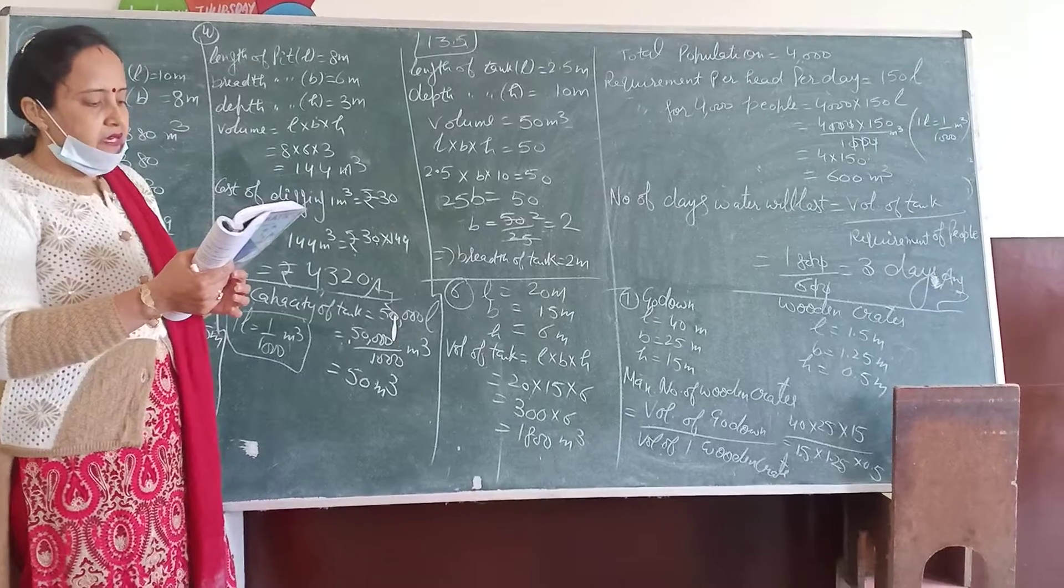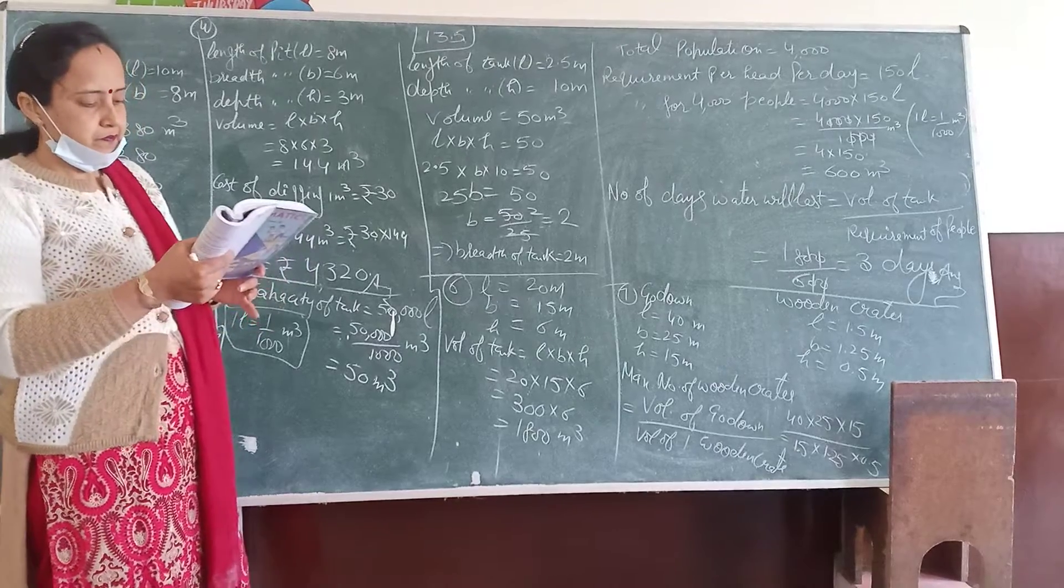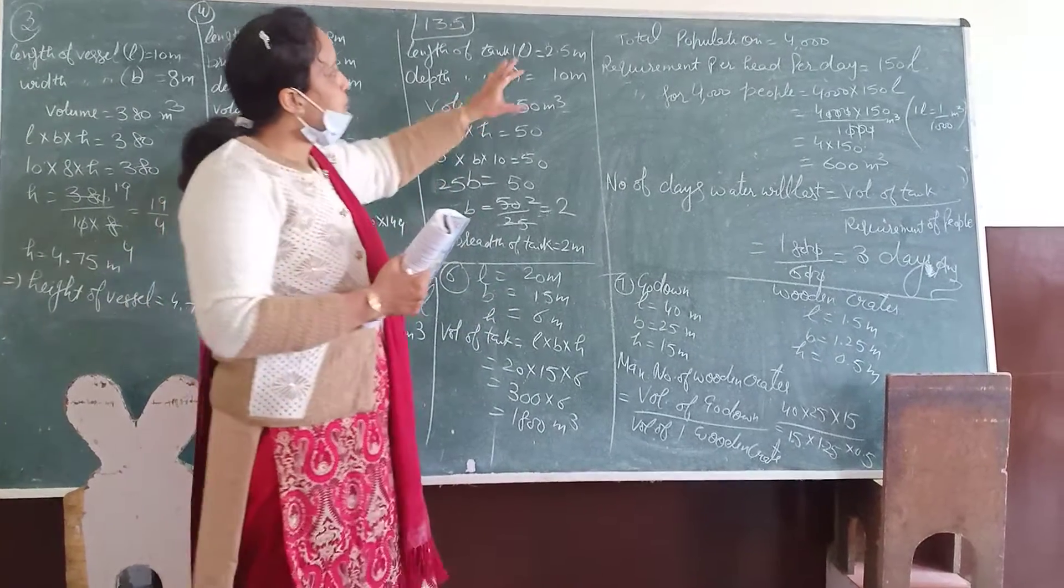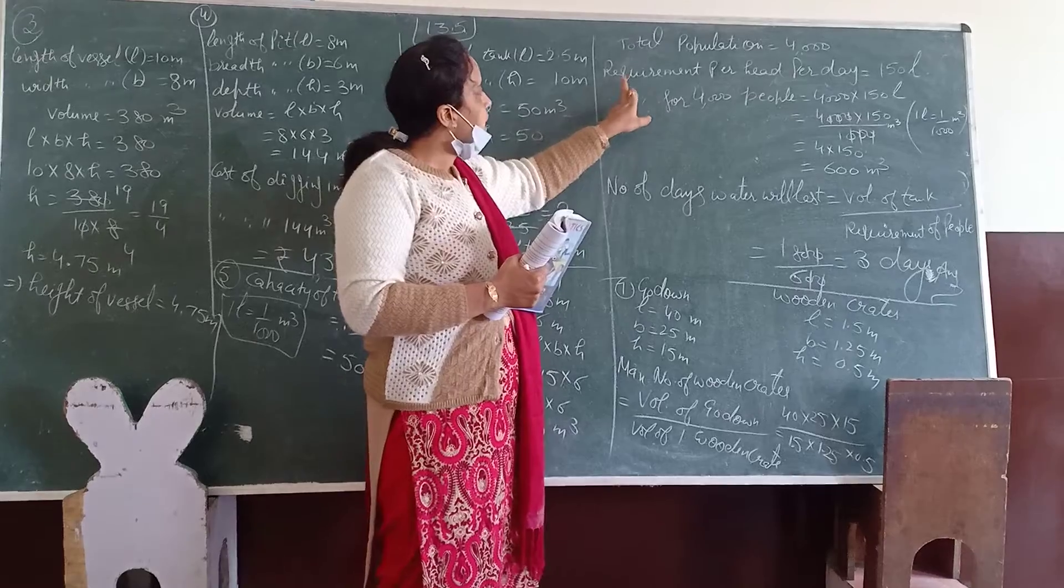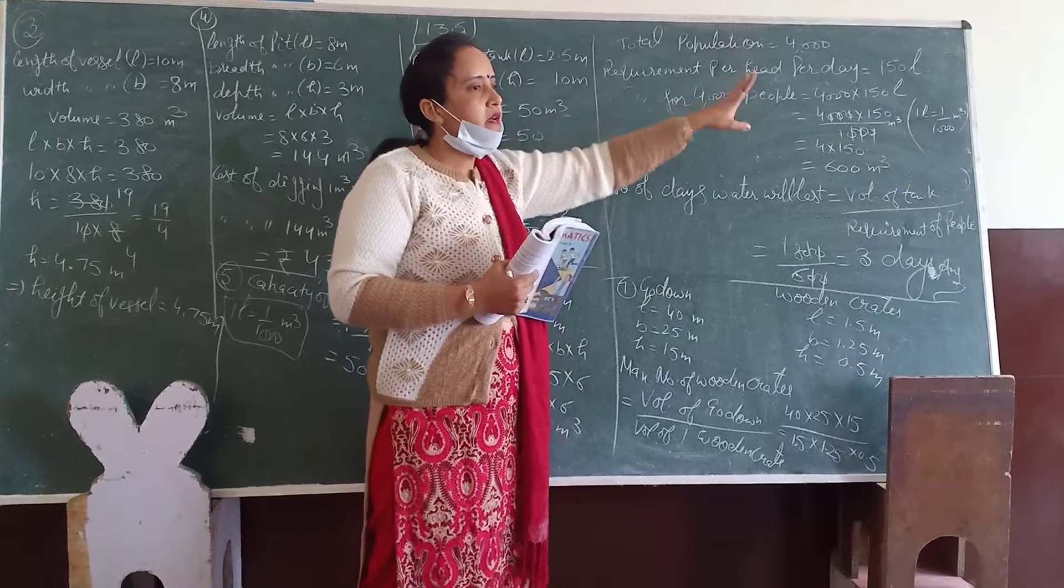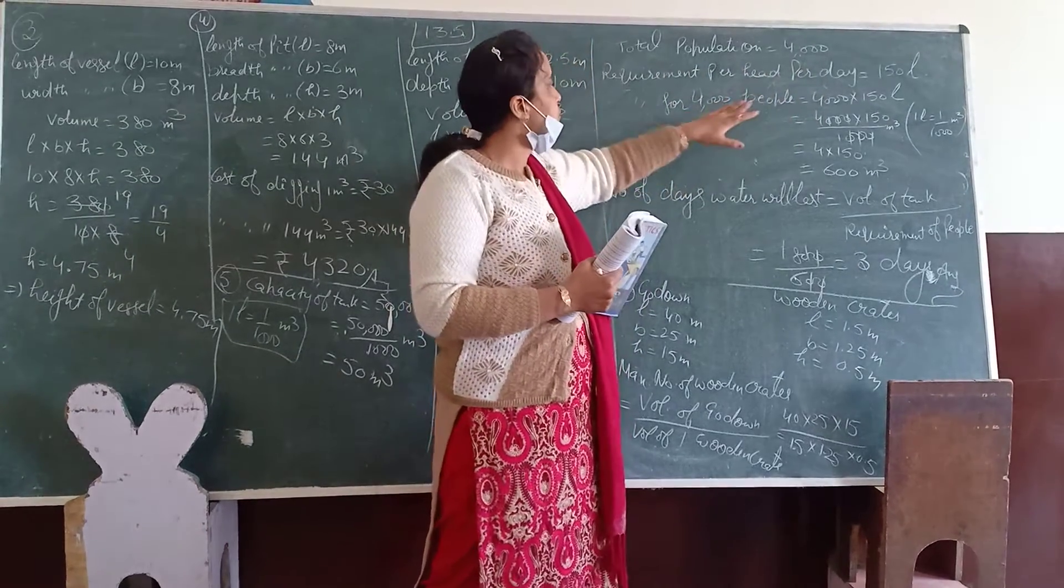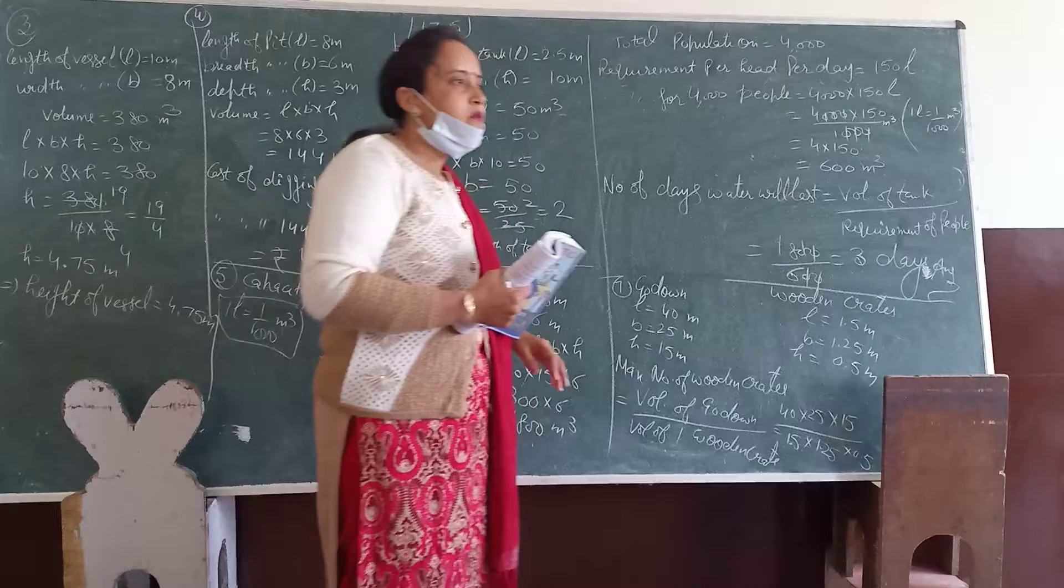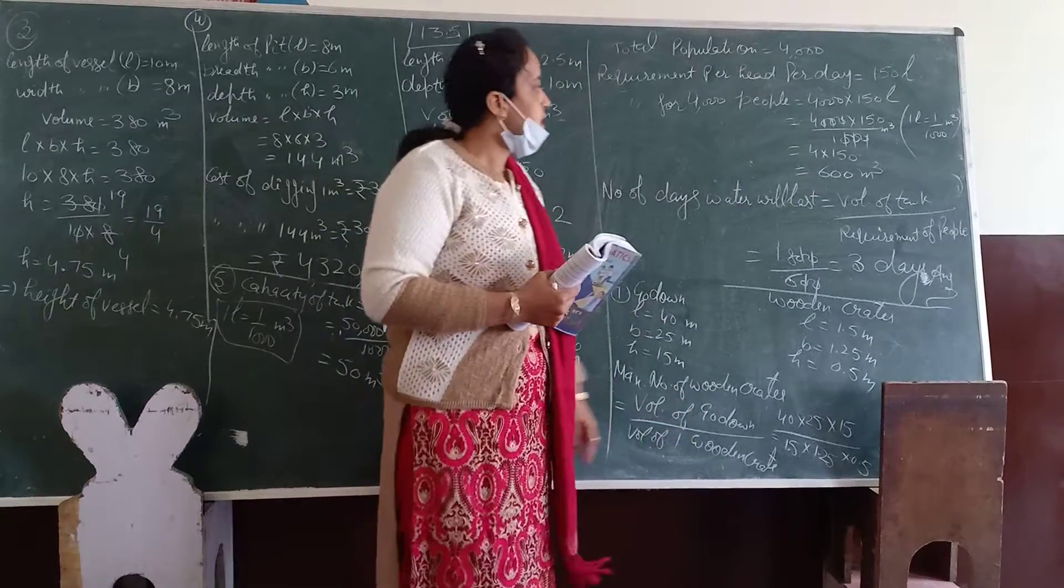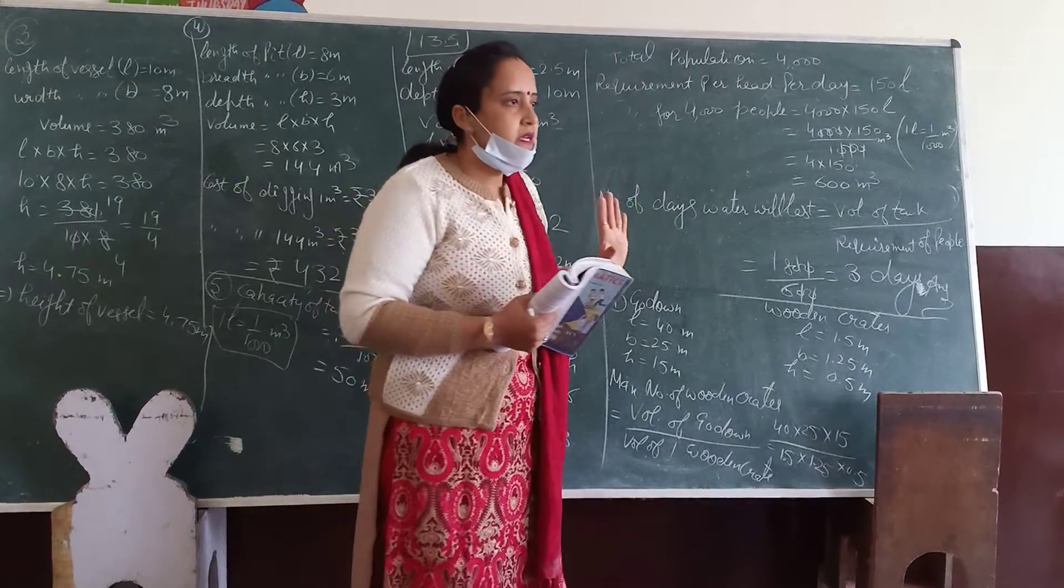Question number 6. A village having population 4,000 requires 150 liters water per head per day. Tank requirement volume is needed. The total is 4,000. Requirement of water per head, single people, per day is 150 liters.